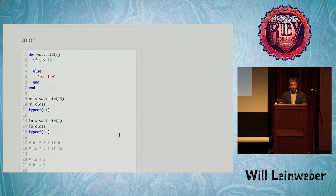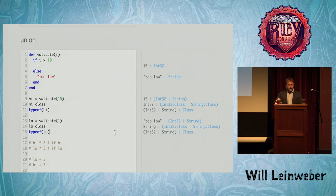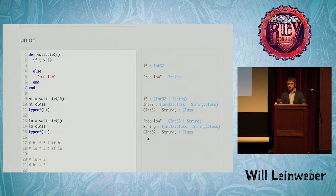Where it gets more interesting is how the union types work. Here's a method that instead of taking different inputs, has different outputs — some of the time it returns Int32, and some of the time it returns a String. The return type, the compile-time type, is a union of Int32 and String. If we ask what the class is at runtime and pass in something high enough, we get the integer out — the runtime class is Int, but the compile-time type is still the union. If we pass in something too low, the runtime type is String, but the compile-time type is still the union of the two.